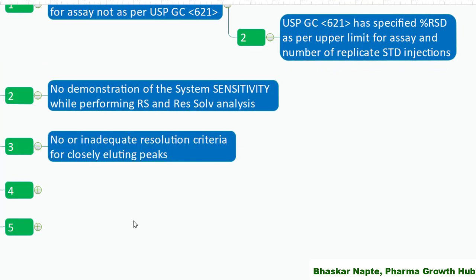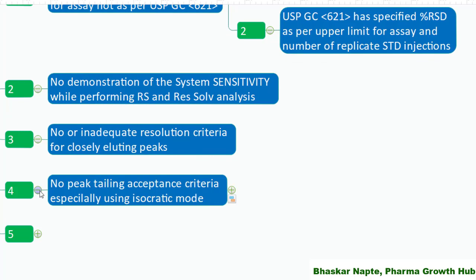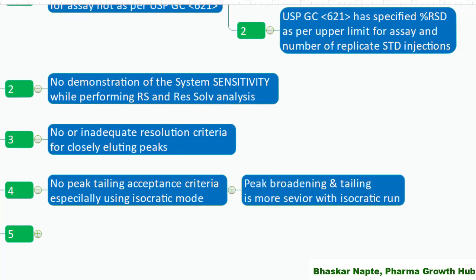No or inadequate resolution criteria for closely eluting peaks. Resolution is very important if you want to accurately integrate two peaks. Base-to-base separation is always preferred, but in the case of poor separation, the allowable minimum resolution must be included in the system suitability criteria. Also, no peak tailing acceptance criteria, especially in isocratic mode — you should have acceptance criteria for peak tailing, for example between 0.8 and 1.5, since peak broadening and tailing are more severe with isocratic runs.